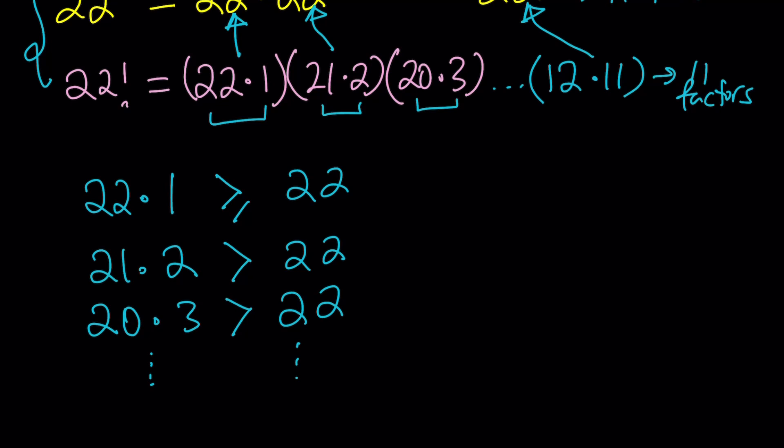The last pair is 12 times 11. And notice that as the numbers get closer and closer, the product gets bigger because their sum is constant. 12 times 11 is 132, and that's definitely much, much bigger than 22.